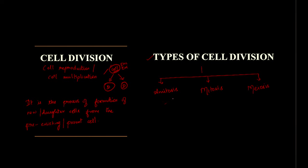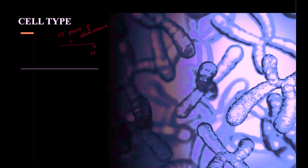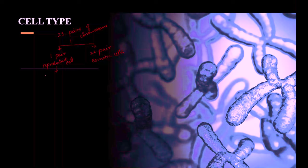Before entering into these three types of division, we have to be very clear with the type of cell. Taking the example of humans, there are about 23 pairs of chromosomes. In the 23 pairs, 22 pairs are about somatic cells and only one pair is about reproductive cells. This reproductive cell is called a haploid cell, which is denoted as n.